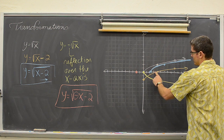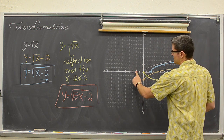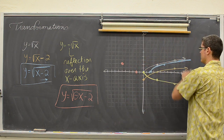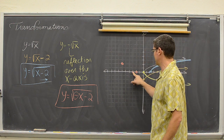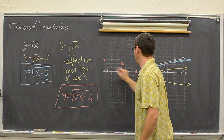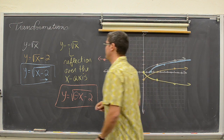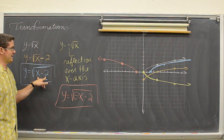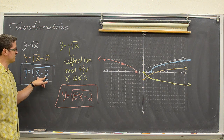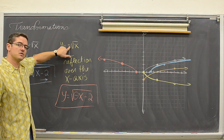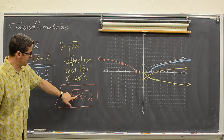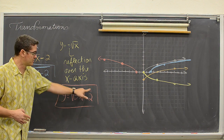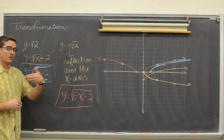So comparing the red and blue graphs, what was at (6, 2) is now at (negative 6, 2), and what was at (11, 3) is now at (negative 11, 3). To summarize: a plus or minus at the end of your function is a vertical shift; a plus or minus inside your function is a horizontal shift; a negative in front of your function is a reflection over the x-axis; and a negative in front of x inside the function is a reflection over the y-axis.